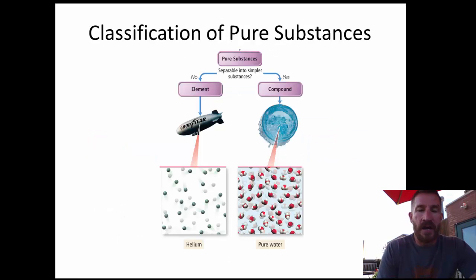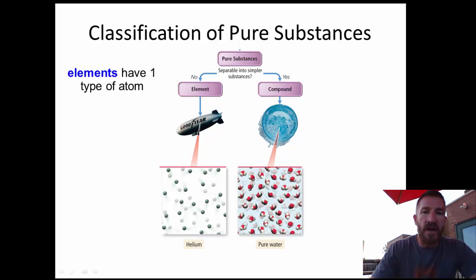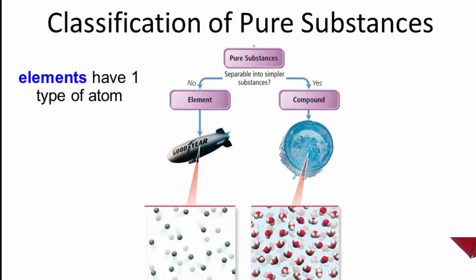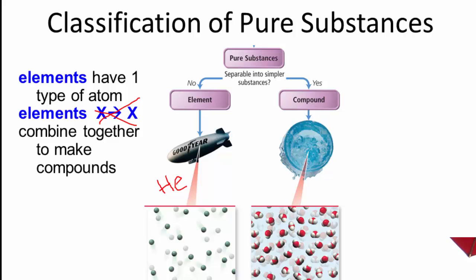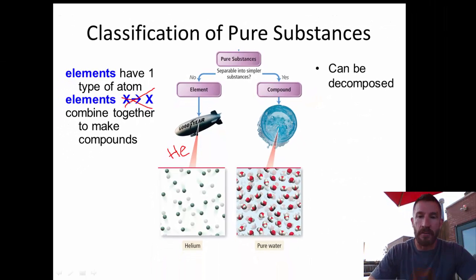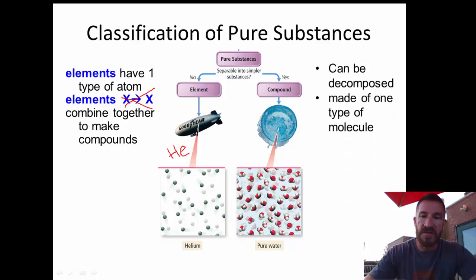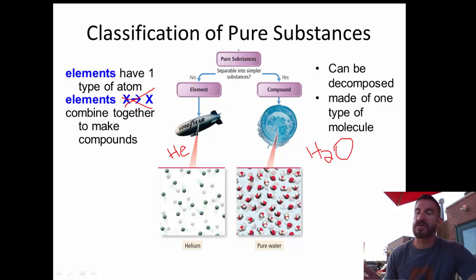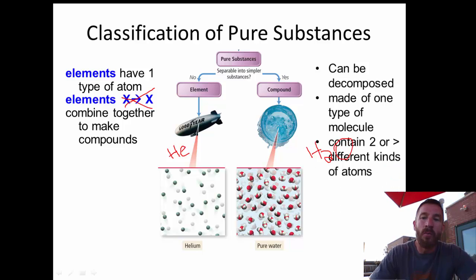Classification of pure substances: elements only have one type of atom, making them easy to distinguish. For example, helium — abbreviated He — is completely one element. Elements cannot be broken down into simpler things; they are the simplest form. Elements combine to make compounds, and compounds can be decomposed chemically back into elements. Compounds are made of one type of molecule — for example, a sample of water contains only H2O, always just that one molecule with no other combination of hydrogen and oxygen. Compounds contain two or more different kinds of atoms, unlike helium which has just one.